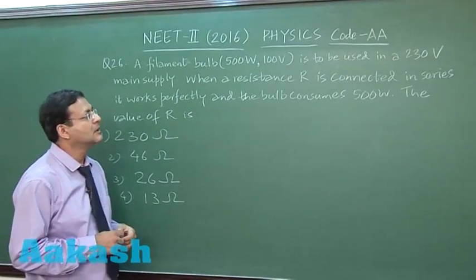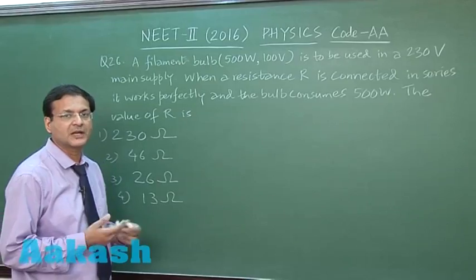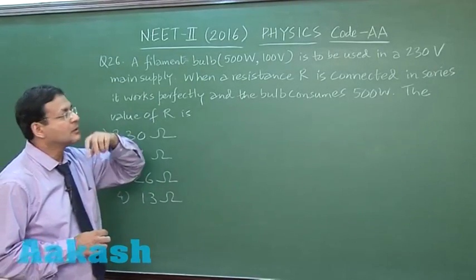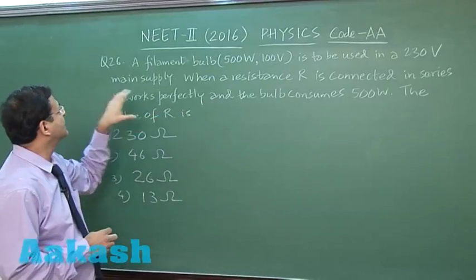So you can calculate the resistance of the bulb like P is equal to V square by R. So you can calculate resistance V square by P, 20 ohm. This is to be used in a 230 volt main supply.